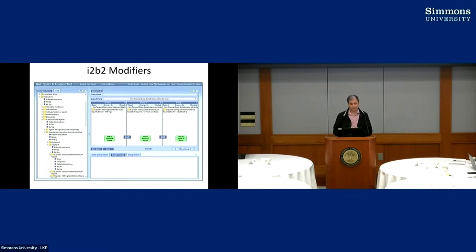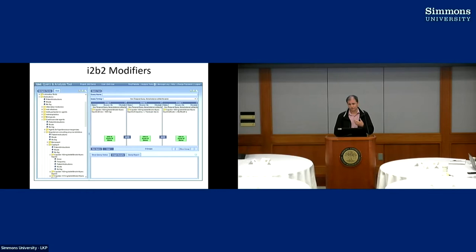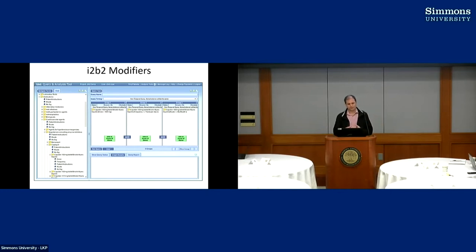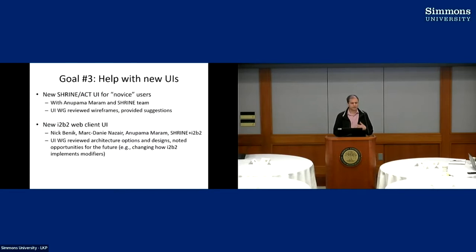Modifiers are challenging. In I2b2 you can do a lot with modifiers but really only experts know how to build up complicated queries. Leaf has a nicer way of doing modifiers but it's very simple — you can only do one modifier and it has to be predetermined in the database, so you can't build complex modifier combinations. We need to come back and figure out if there are templates or simpler approaches to get at the most common modifiers.